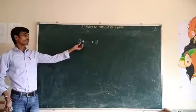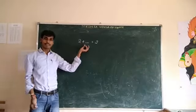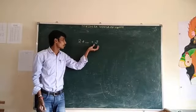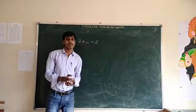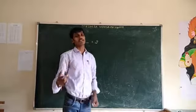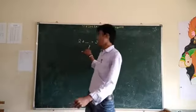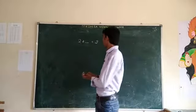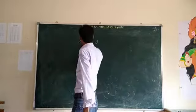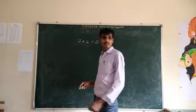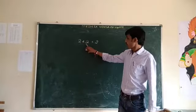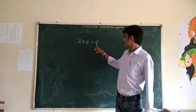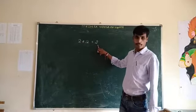Can you fill the blank here? I write: 2 plus blank is equal to 2. What is the value to place in the blank? Very good — 0. Why? Because when you add 0 with any number, it gives the same number.